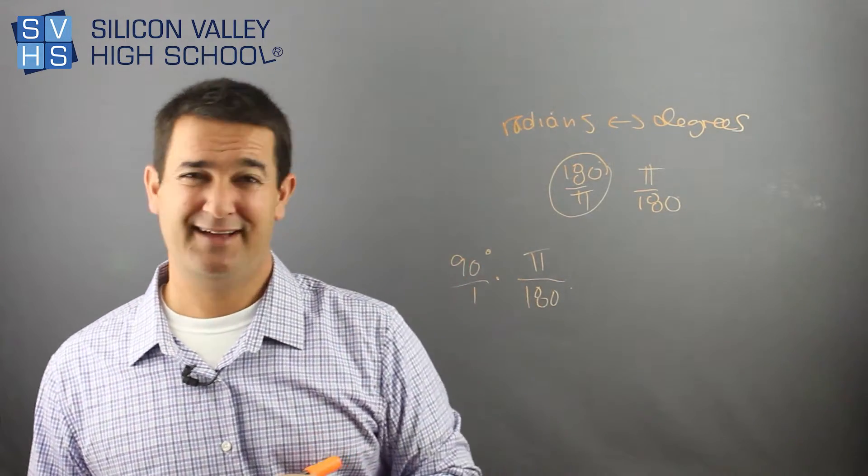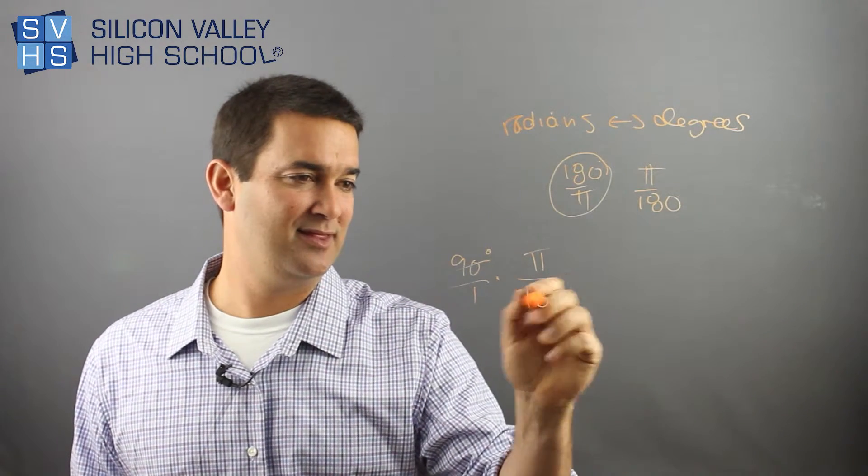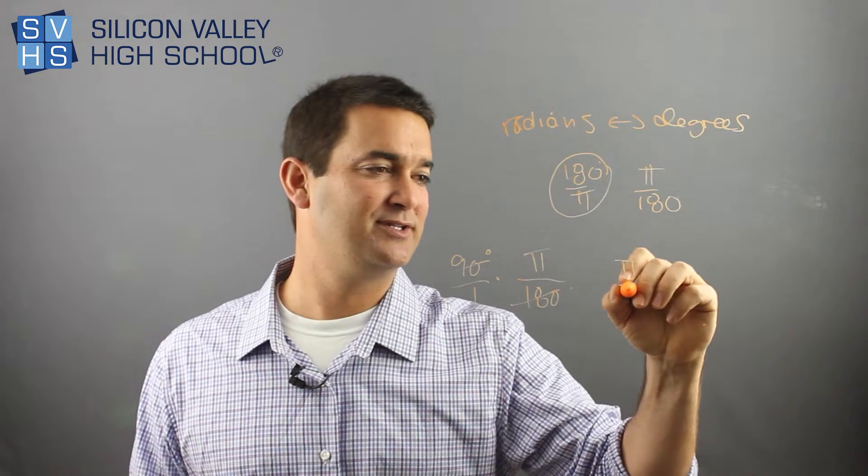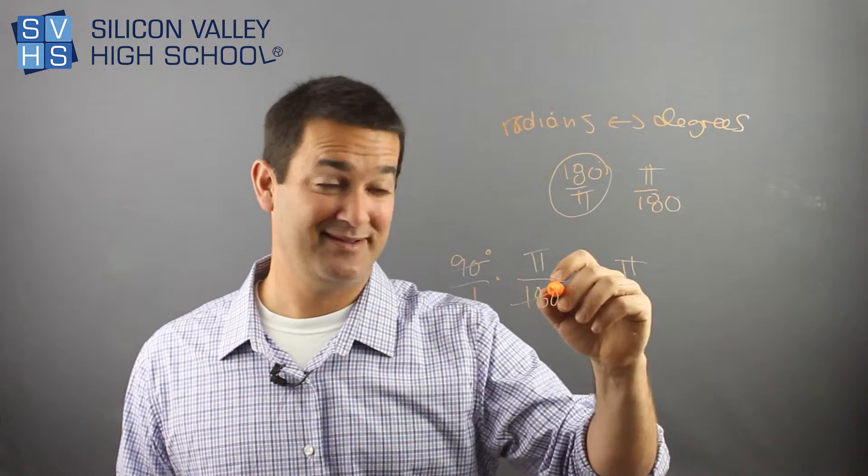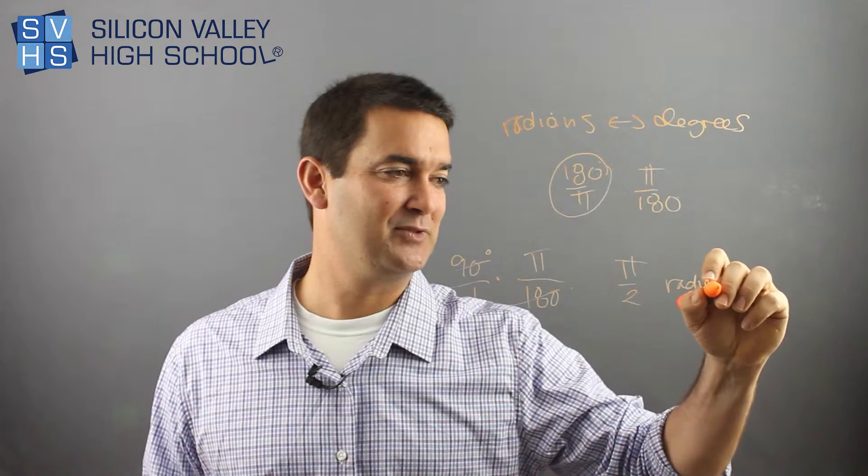Okay, I'm going to put that over 1. Done. This cancels with this, and I'm left with pi over 2. That is beautiful. That is 90 degrees. I mean, excuse me, that was 90 degrees and now it's pi over 2 radians. Cool?